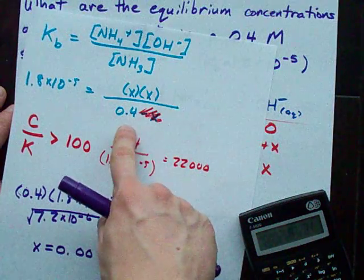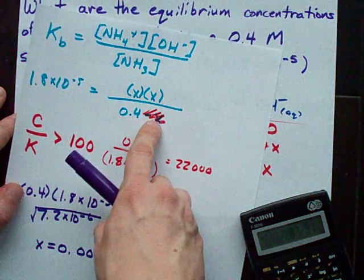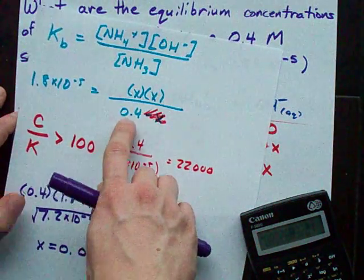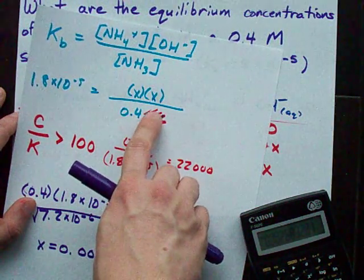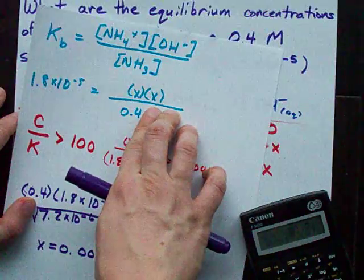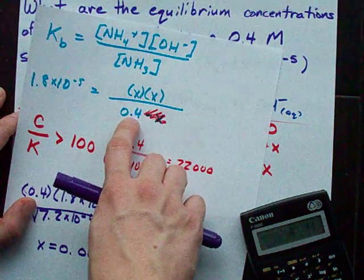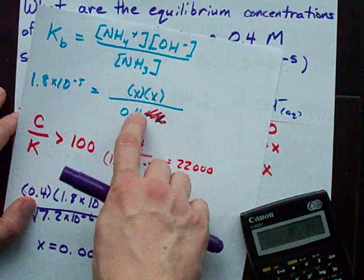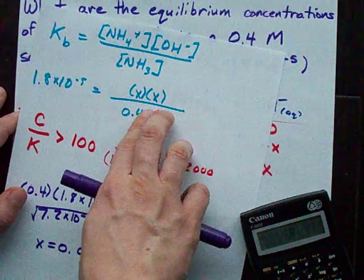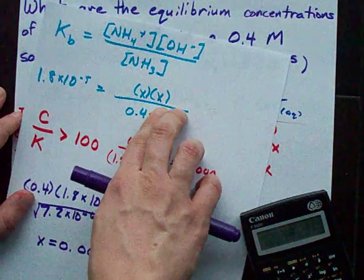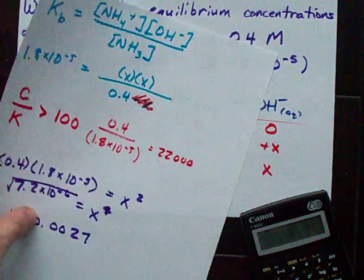The analogy I like to make here is that if you're comparing x to 0.4, it's like if you start with a millionaire and he drops a dollar. Does that dollar even really matter to him? Not really. He still has $999,999, which is about a million. So x, if it's really small, doesn't matter, and you can eliminate it. Look, without doing the quadratic formula, I just solved for x.